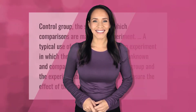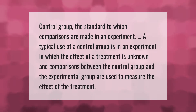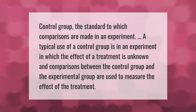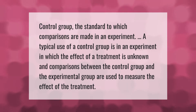Control group: the standard to which comparisons are made in an experiment. A typical use of a control group is in an experiment in which the effect of a treatment is unknown, and comparisons between the control group and the experimental group are used to measure the effect of the treatment.